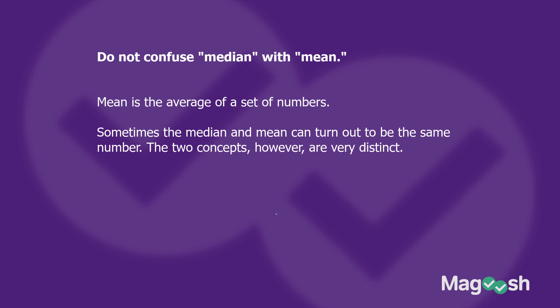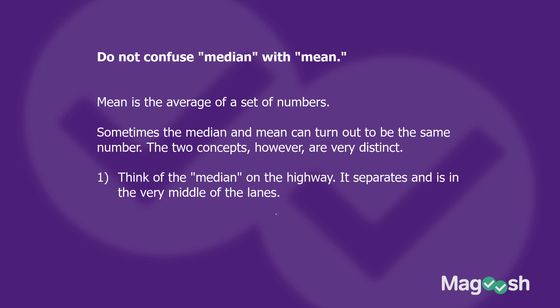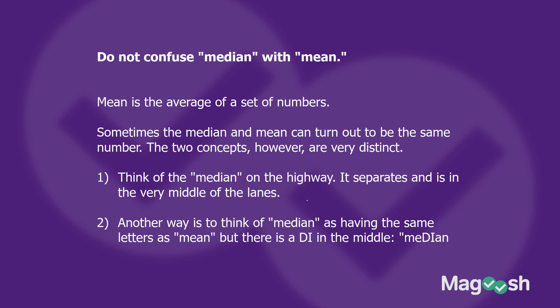A good way to remember median versus mean, especially during the stress of a test: think of the median on the highway — it separates the two lanes on either side, so the median is in the middle of the highway, in the middle of the numbers. Also notice that the letters M-E-A-N are contained in the word median, but median has a big 'DI' in the middle, showing you it's all about that middle part, not the average the way mean is. Those are two good ways to keep these concepts separated.